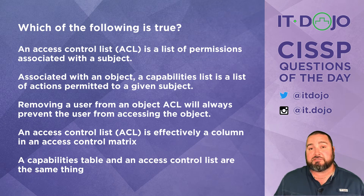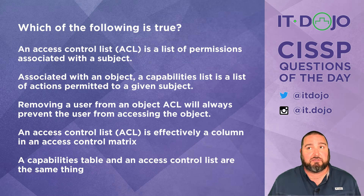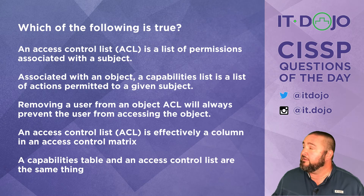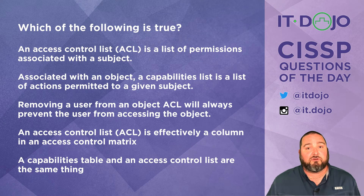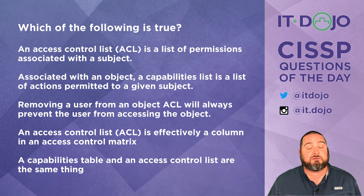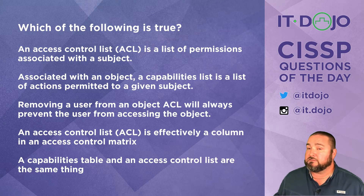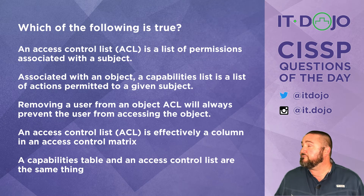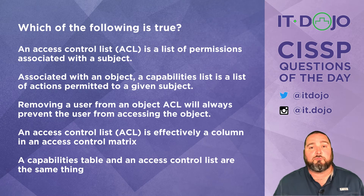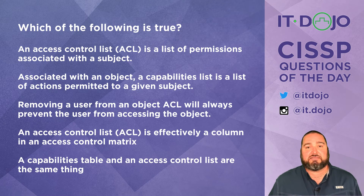The next answer choice says that associated with an object, a capabilities list is a set of permissions granted to a particular subject. That is a very complicated statement and it is not correct — a capabilities list would be associated with a subject, not with an object. So this is not correct.